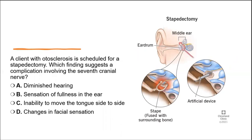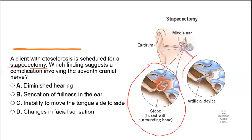Next question: a client with otosclerosis is scheduled for a stapedectomy. Otosclerosis involves three little bones in the ear — the malleus, incus, and stapes. In otosclerosis, the stapes begins to fuse with the surrounding bone and can no longer transmit sound waves, causing conductive hearing loss. The procedure removes the fused stapes and replaces it with a titanium prosthesis.